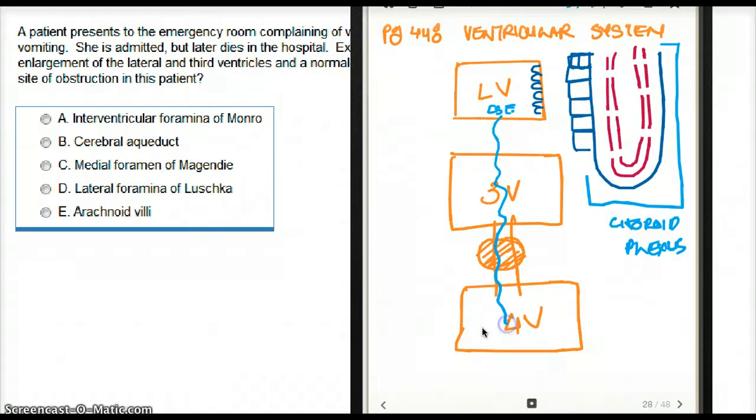The CSF collects and comes to the fourth ventricle, and then moves on to these two pathways called foramen of Magendie and foramen of Luschka.